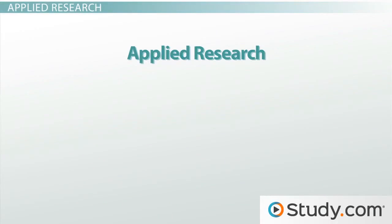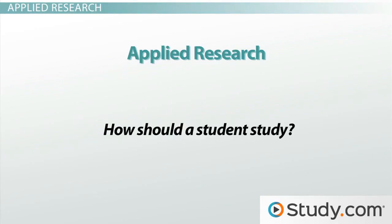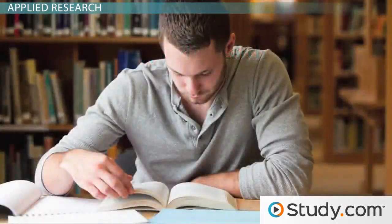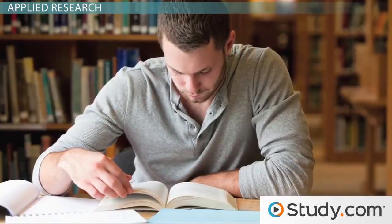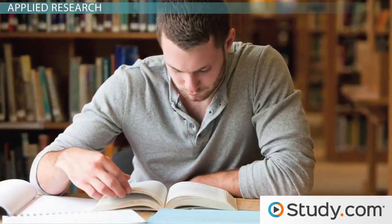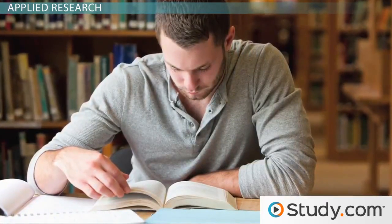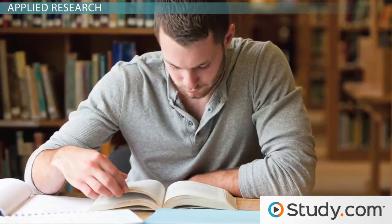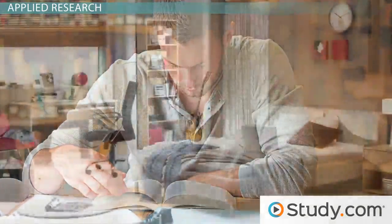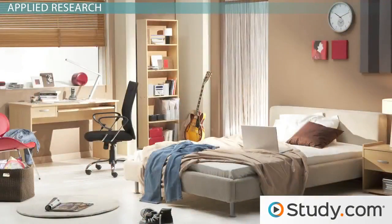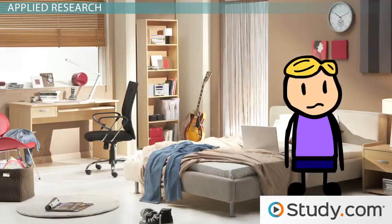Applied research is something that we can use. Here is a simple question: how should a student study? There are many ways to go about answering this question, and the ones we will look at have a direct and applicable finding. For example, what can research tell us about how a student studies? Most people like to study in their bedroom, laying on their bed in some weird posture. They collect all their notes and spread them haphazardly across the bed.